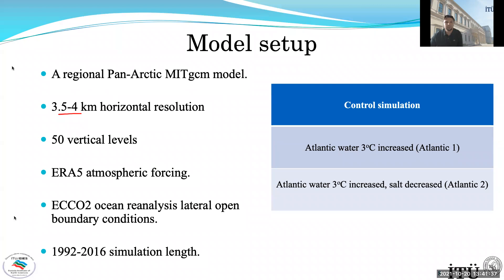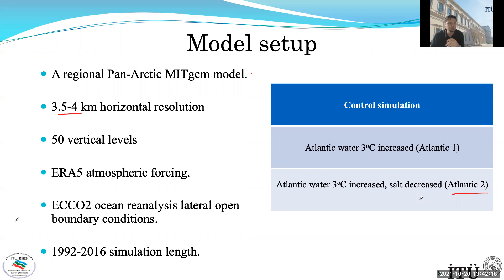I conducted three different simulations. One is the control. The second — Atlantic 1 — increases the Atlantic water temperature by three degrees. The third — Atlantic 2 — both increases the temperature and decreases salinity to compensate for the density change, since warmer water is lighter. This density compensation also serves as a proxy for future scenarios, because in the future Atlantic water is warming while precipitation in the North Atlantic is increasing, making the water fresher. The results between these two simulations were significantly different.